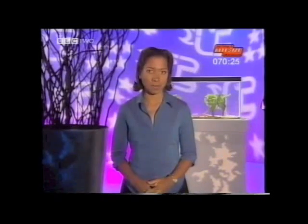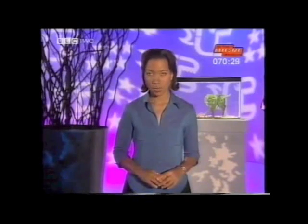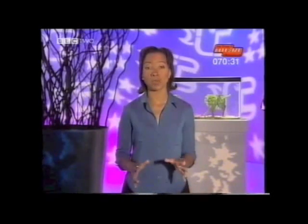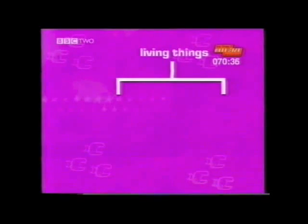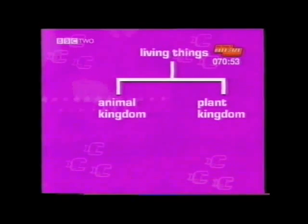All living things can be sorted into groups, and the members of each group will have similar features. This process of sorting things into groups is called classification. We can first divide up all living things on Earth into an animal kingdom and a plant kingdom. For key stage three, you need to know about the animal kingdom — how it is divided up and why.